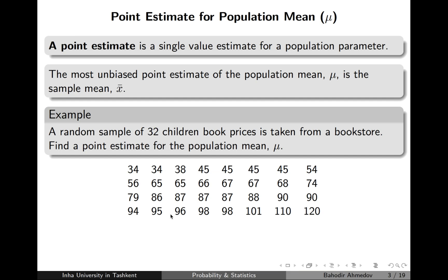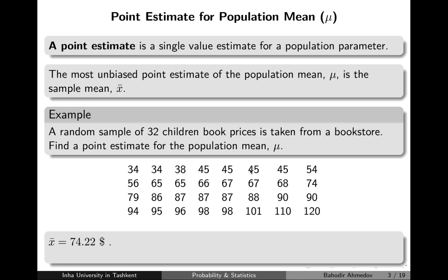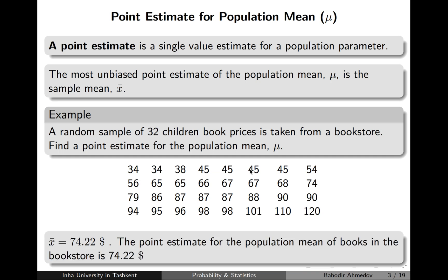Let's consider an example. This is a sample of 32 items — the prices of those items — and I would like to estimate the average price of all the items in the store. If I find the average of this sample, it's going to be $74.22, and my point estimate for the population mean would simply be 74.22.